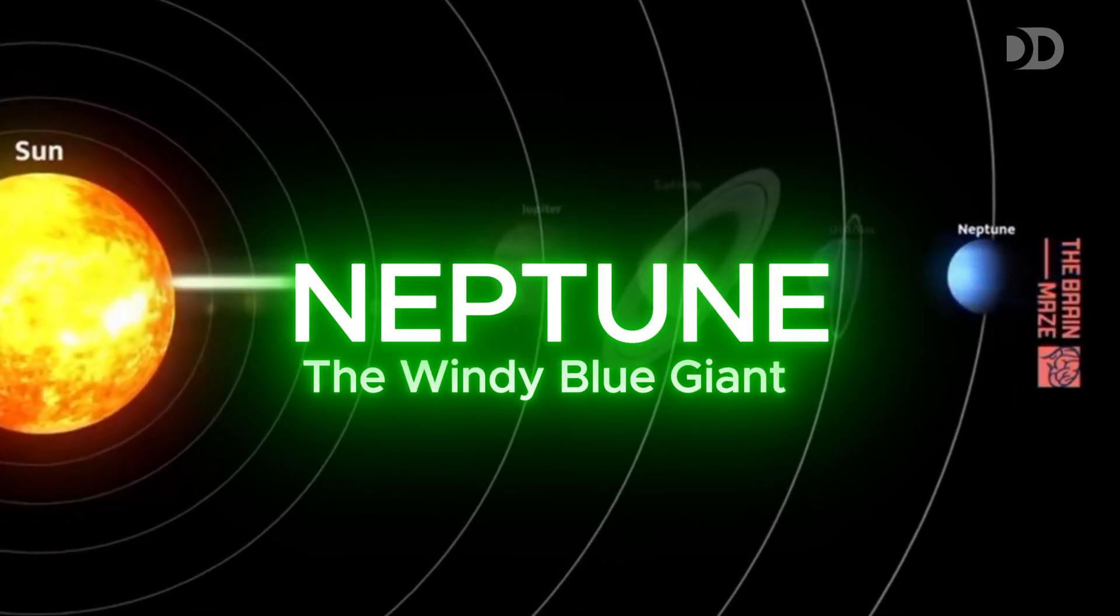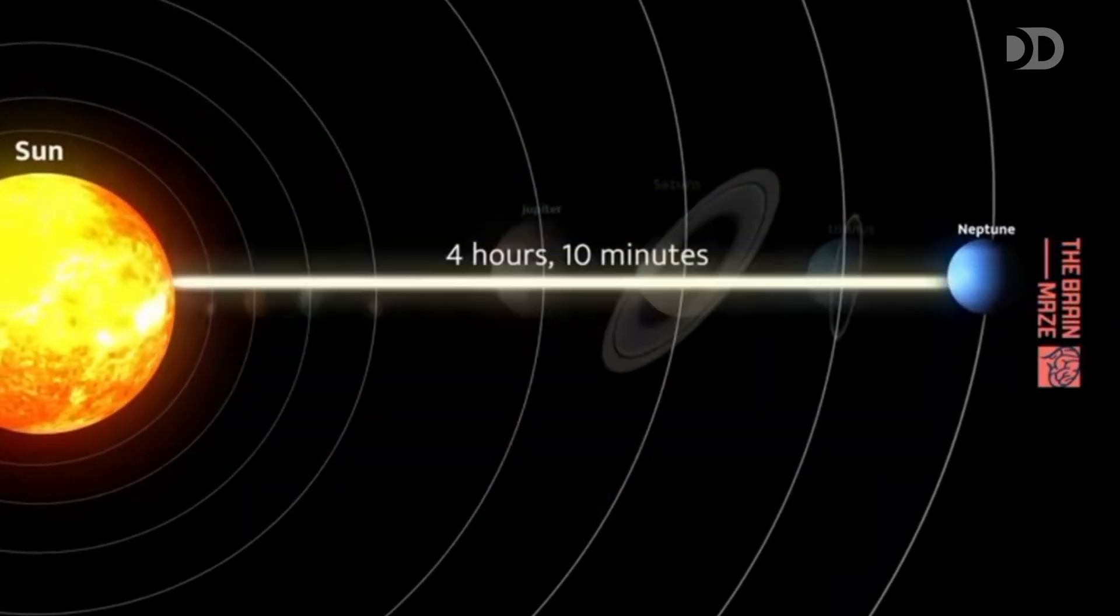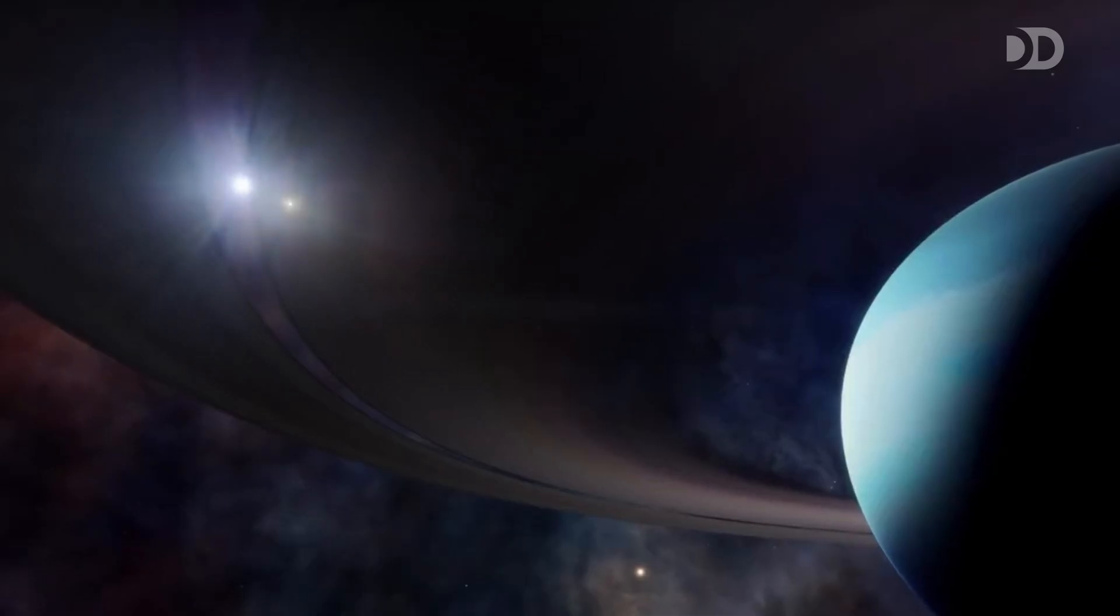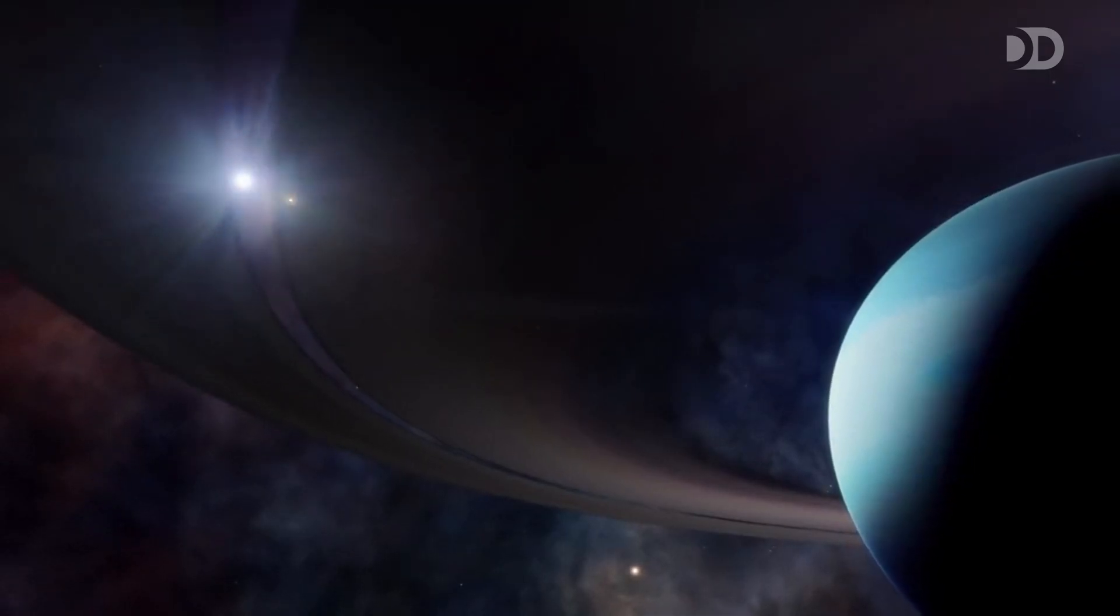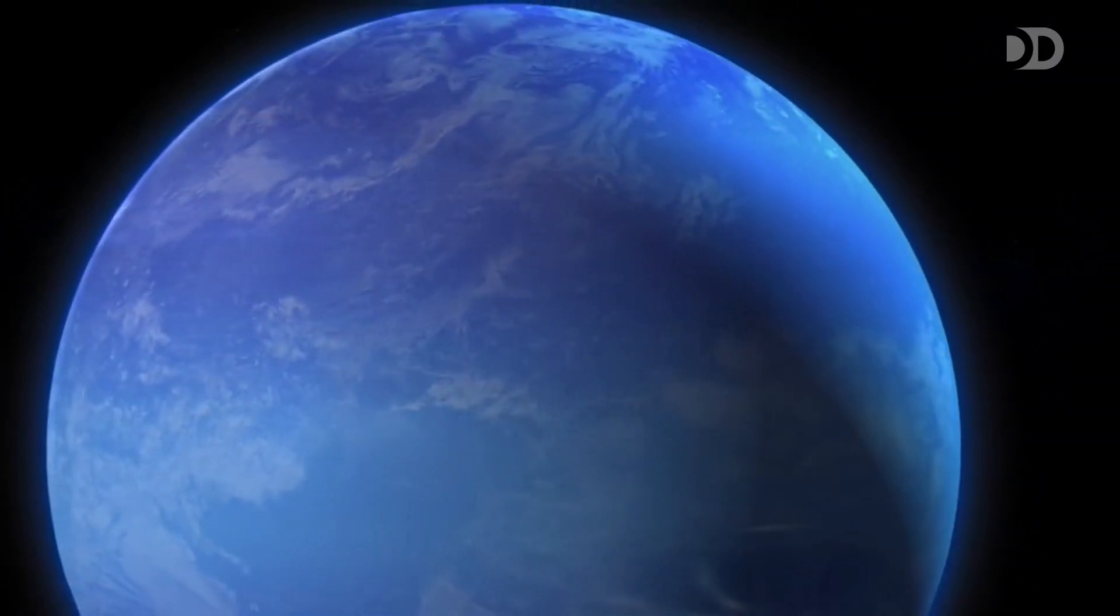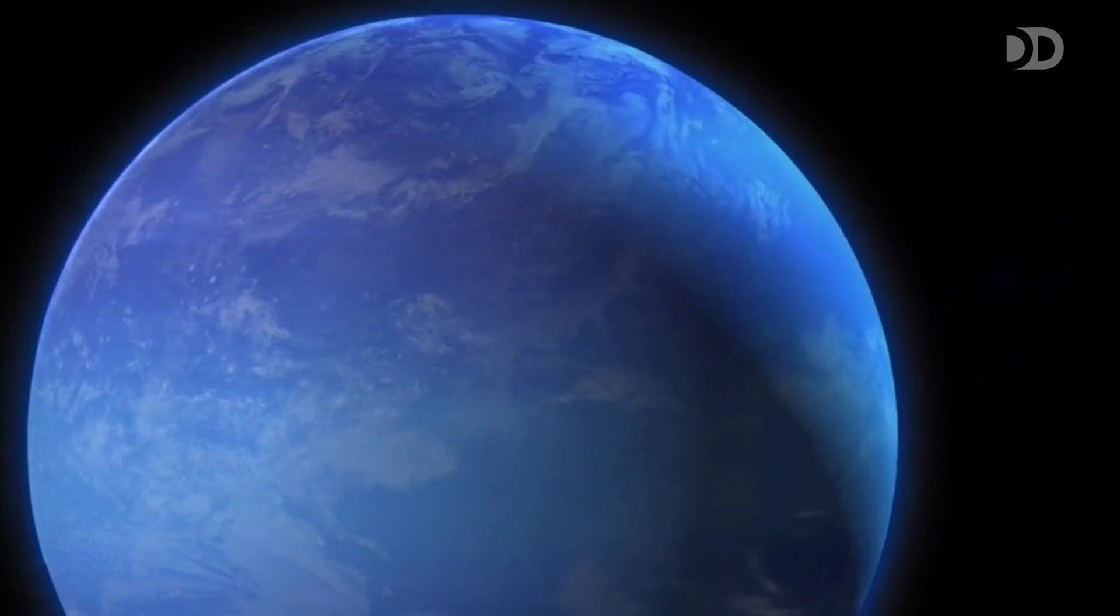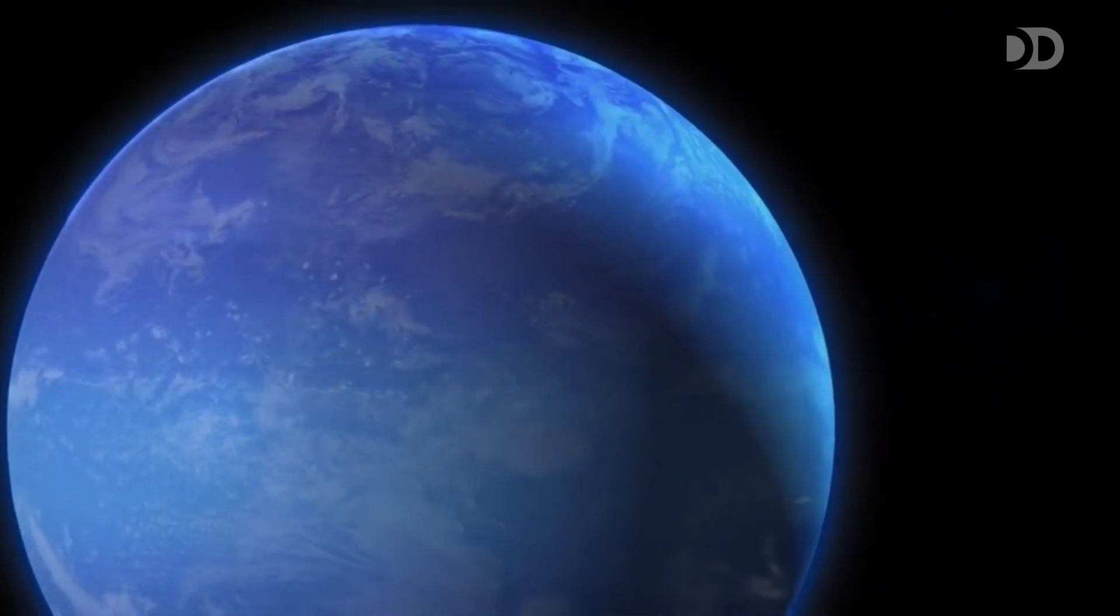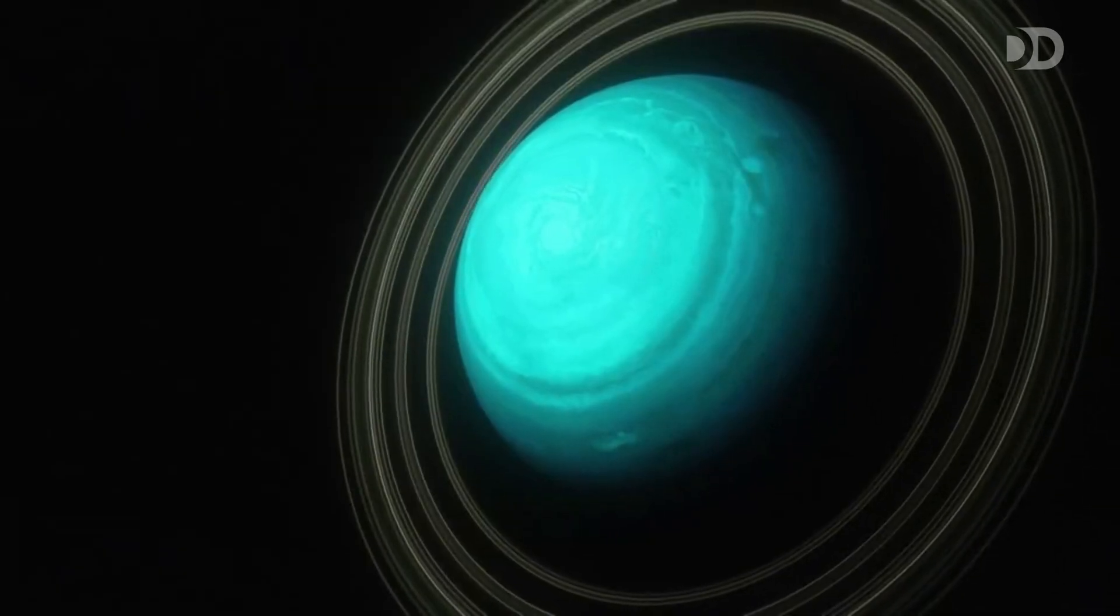Our journey culminates at Neptune, the farthest planet from the Sun. Neptune's deep blue hue and supersonic winds make it a world of extremes. The great dark spot, a massive storm, once rivaled Jupiter's red spot. Its largest moon, Triton, orbits backward, hinting at a dramatic past. Neptune's realm is a fitting finale to our planetary tour.